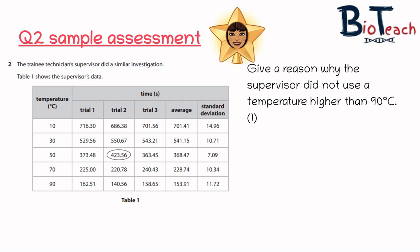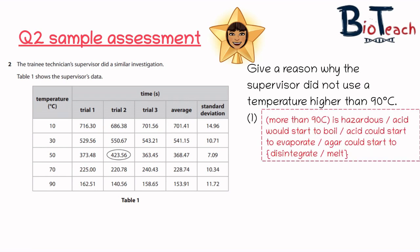So for one mark you could say that more than 90 degrees is going to be quite hazardous and at that point the acid is going to start to boil or it could start to evaporate, and because we're using agar as well, at that temperature the agar could completely disintegrate or melt.